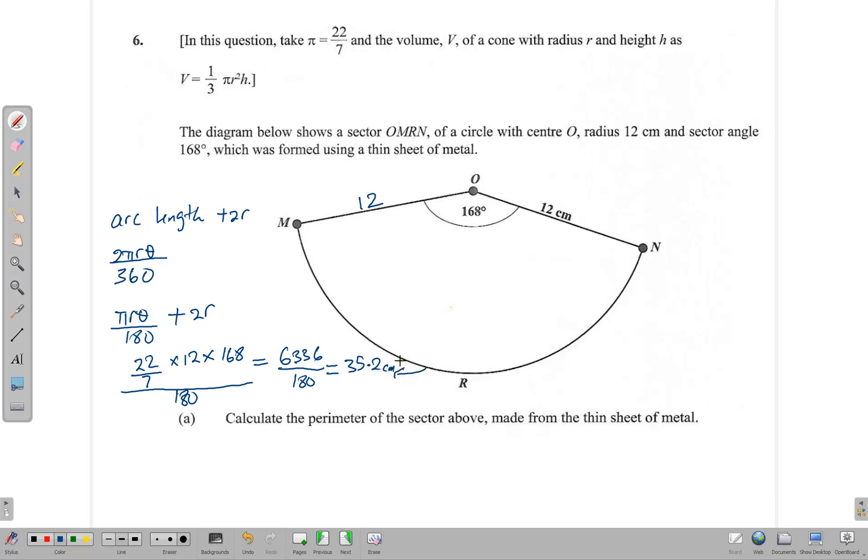So that's the length of this arc, 35.2 centimeters. Now the perimeter is arc length, which is 35.2, plus 2 times 12, that's 2 times the radius. So it's 35.2 plus 24, all of that gives us 59.2 centimeters, and that is our perimeter.